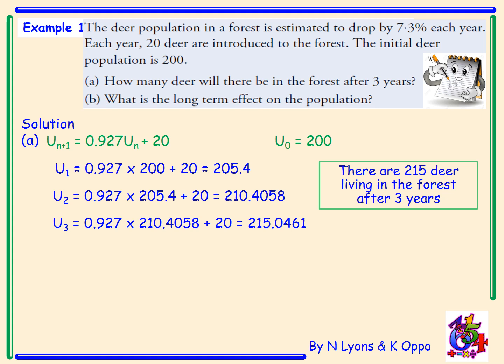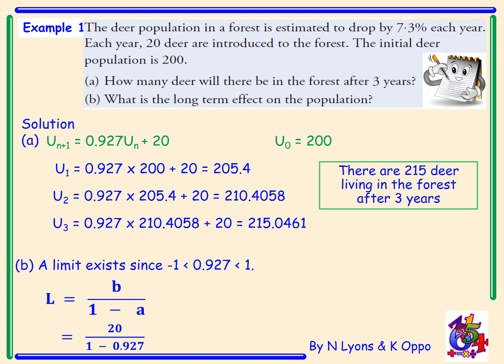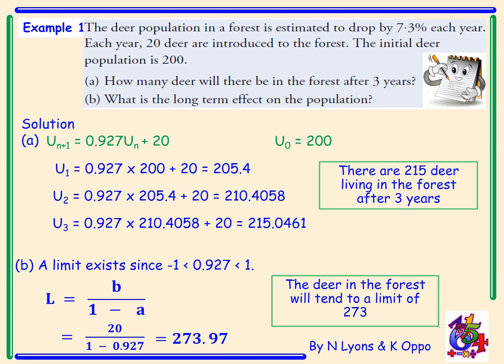For part b, when a question asks about the long-term effect on the population, we need to consider whether the recurrence relation tends to a limit. A limit does exist since a = 0.927 lies between minus 1 and 1. Using the formula L = b/(1 − a), with b = 20 and a = 0.927, substituting these values gives approximately 273.97. Rounding down, the deer population will tend to a limit of 273.